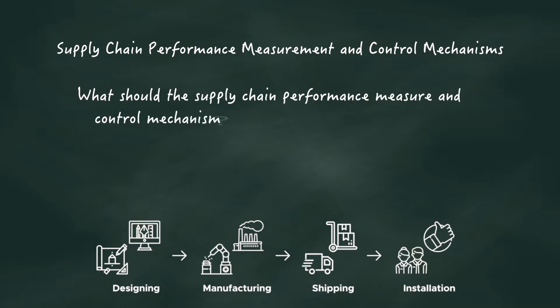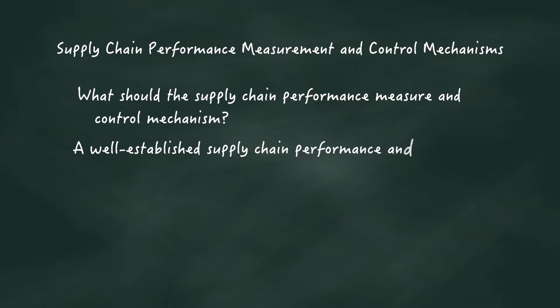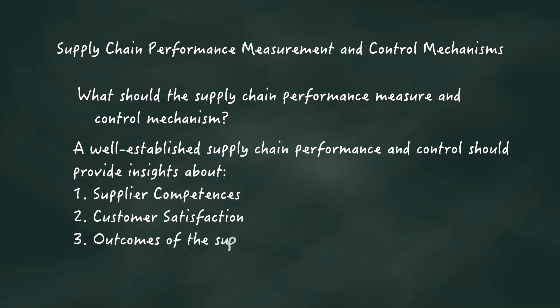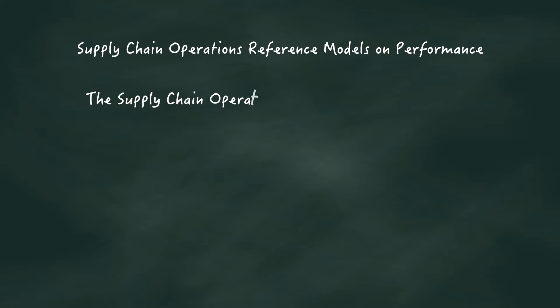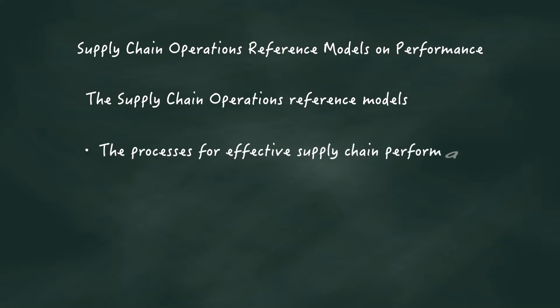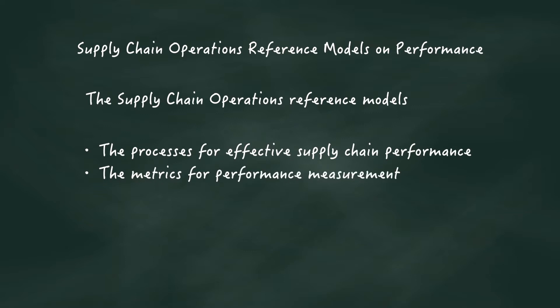What should the supply chain performance measure and control mechanism be? A well-established supply chain performance and control should provide insights about supplier competencies, customer satisfaction, and outcomes of supply chain network and partnership. The supply chain models — namely, supply chain operations reference model, design chain operations reference model, and customer chain operations reference model — define the processes for effective supply chain performance and metrics for performance measurement.